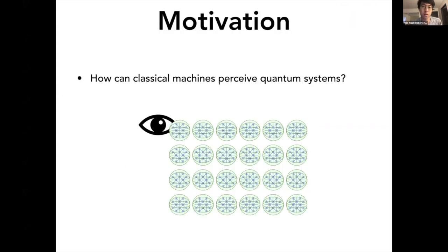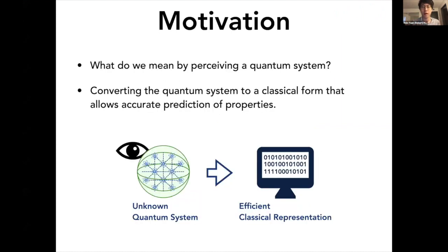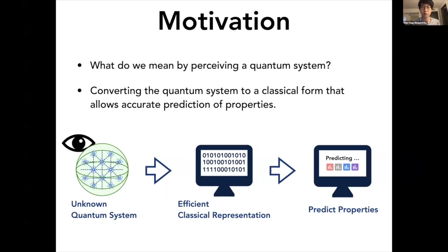The main motivation for this work is to understand how a classical machine could perceive and look at quantum systems. What we mean by that is the ability of converting some unknown quantum system to efficient classical representation such that this classical representation allows you to accurately predict various different properties of the original unknown quantum system.